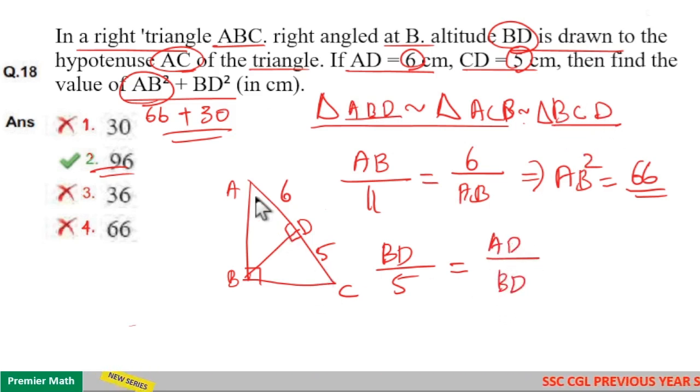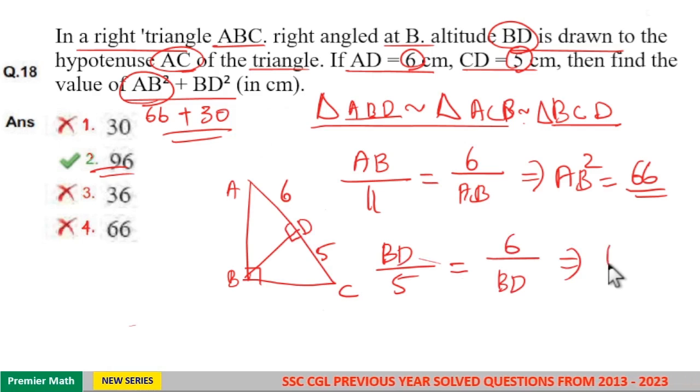Now, AD is equal to 6 here. So, BD² is equal to 30.